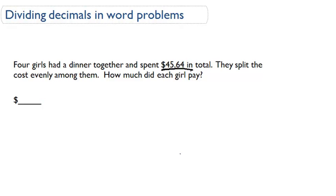So they spent $45 total. It was four girls, and they split it evenly. So what we need to do is we need to do $45.64, which is the total cost of the dinner, and we're going to have to divide it by four because it was four girls evenly to figure out how much they spent.